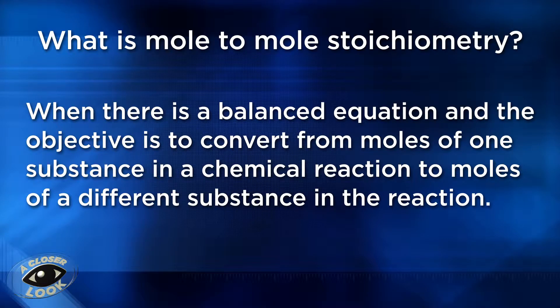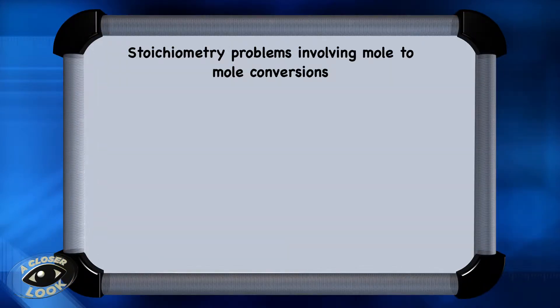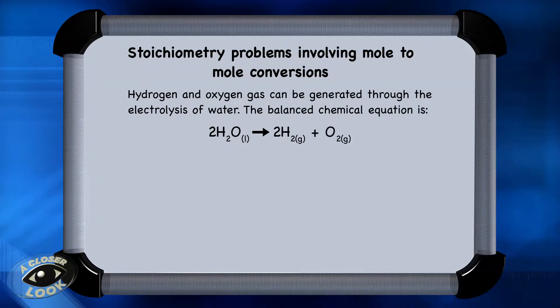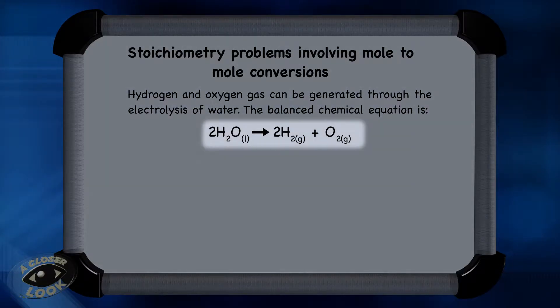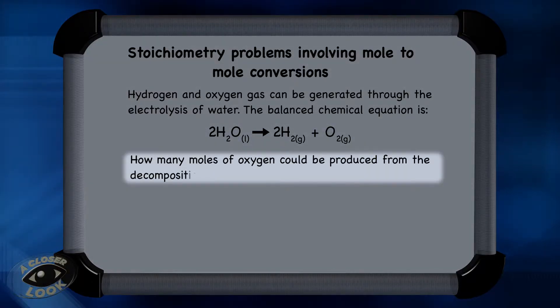Here's an example of a stoichiometry problem that involves mole-to-mole conversions. Hydrogen and oxygen gas can be generated through the electrolysis of water. The balanced chemical equation is two moles of water decomposed to form two moles of hydrogen gas and one mole of oxygen gas. How many moles of oxygen can be produced from the decomposition of 15 moles of water?